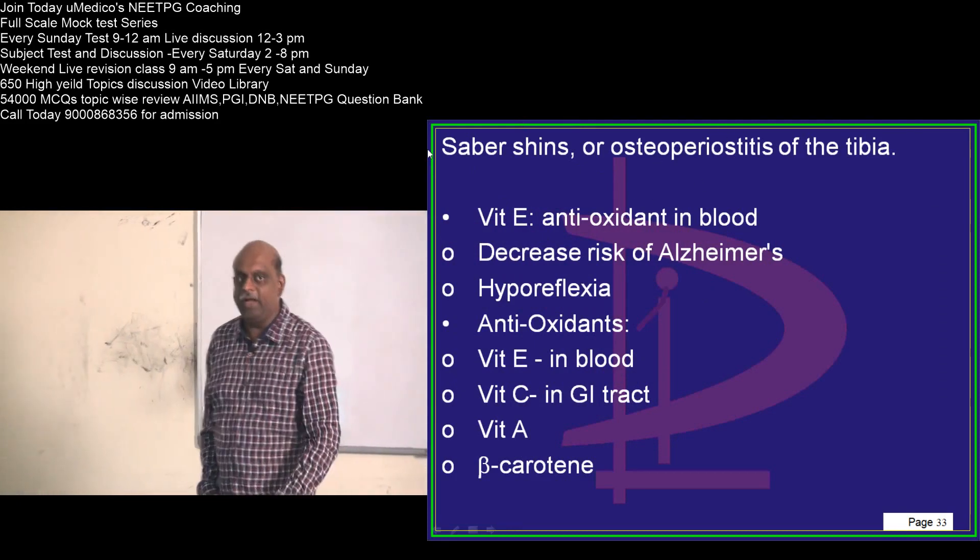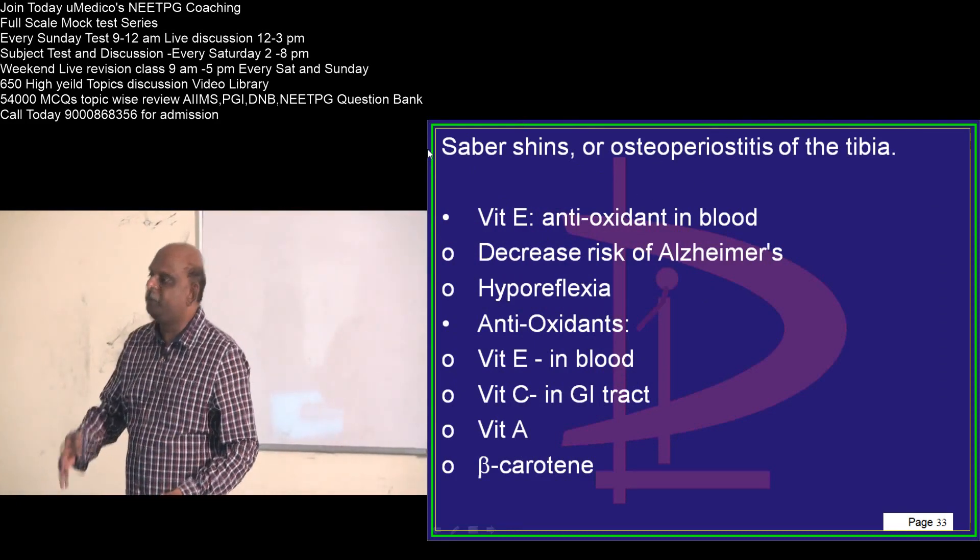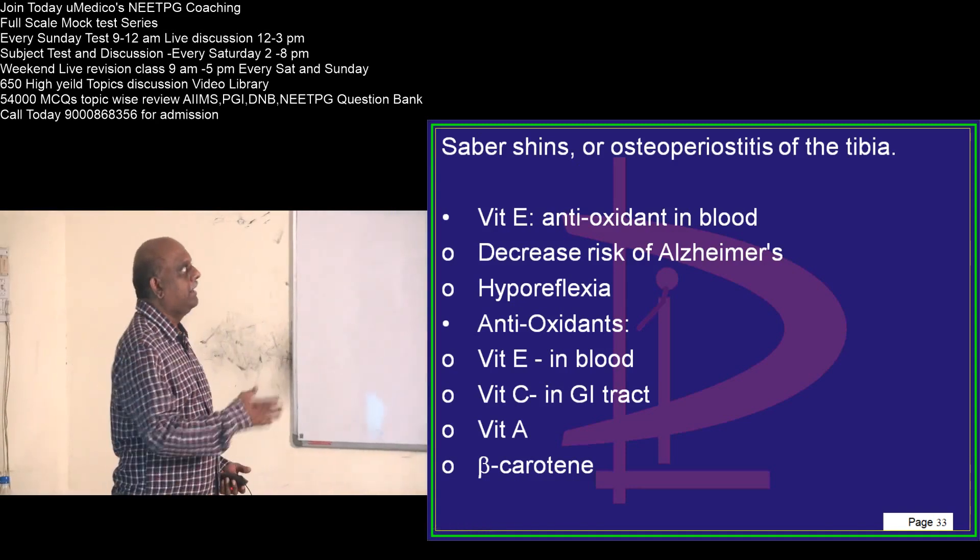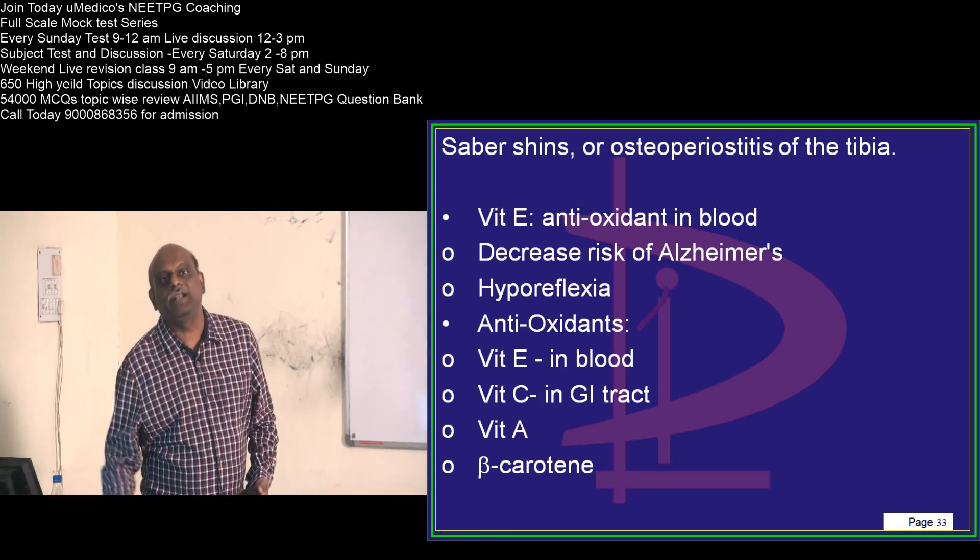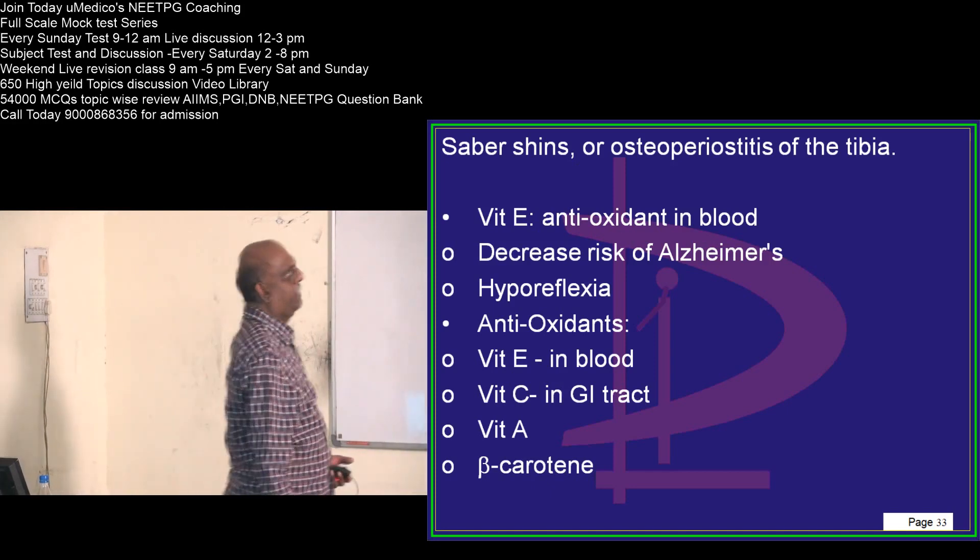And why does anterior bowing occur in case of congenital syphilis? Because syphilis leads to the osteoperiostitis of the tibia, and that leads to development of the anterior bowing.